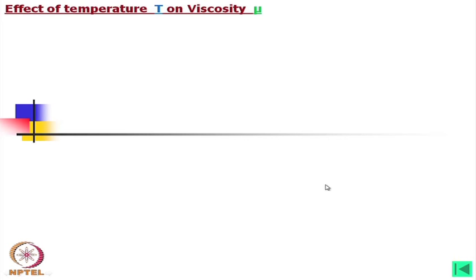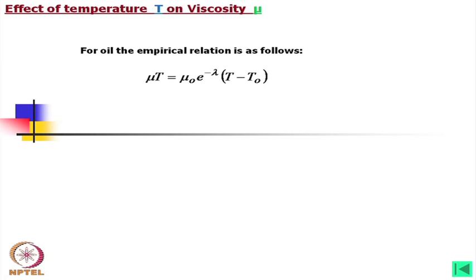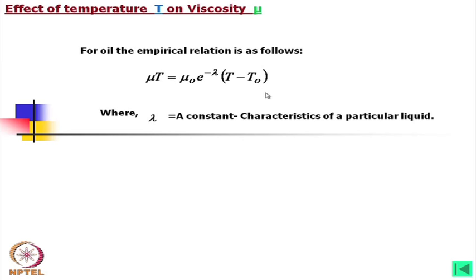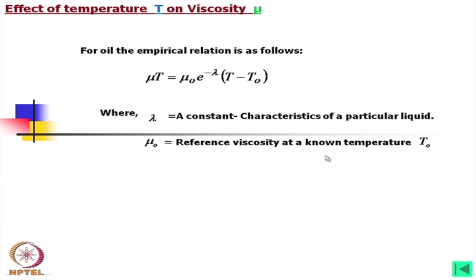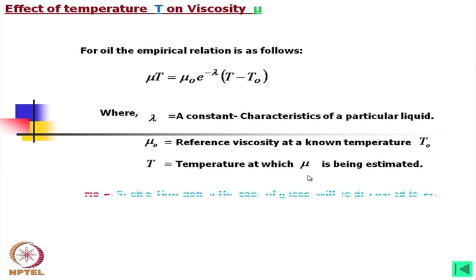The effect of temperature T on viscosity μ: for oil the empirical relation is μ_T = μ₀ · e^(−λ(T − T₀)), where λ is a constant characteristic of the particular liquid, μ₀ is the reference viscosity at a known temperature T₀, and T is the temperature at which μ is being estimated. Note that such estimation for gases will be discussed later, using a different formula — oil and gas must not be confused.